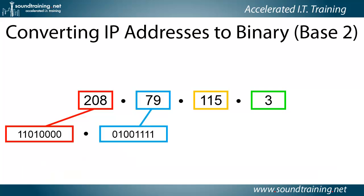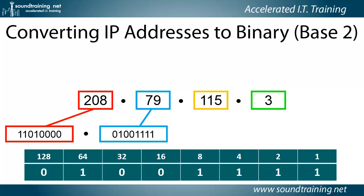Let's take a look at 79: 0100 1111. In this case, the 1-bit, 2-bit, 4-bit, and 8-bit are turned on, as is the 64-bit. So 1 plus 2 equals 3, plus 4 equals 7, plus 8 equals 15, plus 64 equals 79.